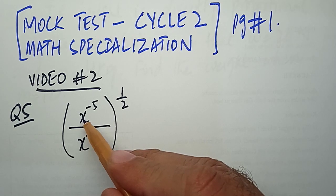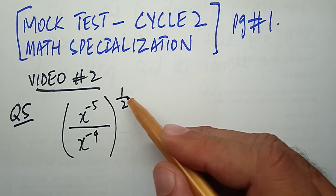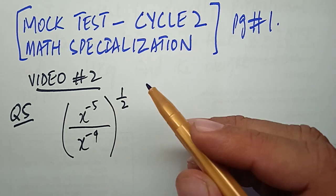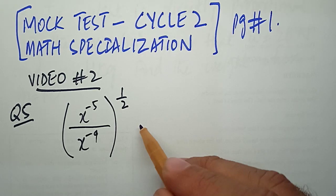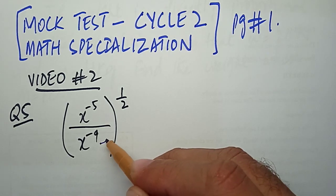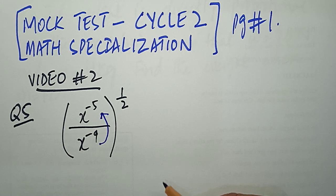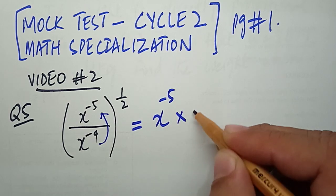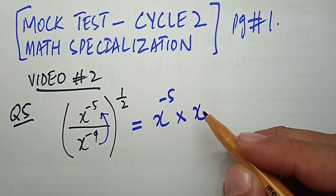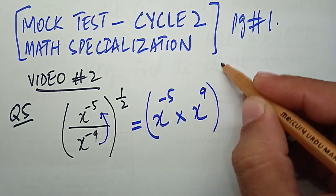In the numerator, the power of X is minus 5; in the denominator, the power of X is minus 9, and then we have a whole power of 1 upon 2. To simplify this, we first need to shift X having a negative index in the denominator to the numerator to make it positive — so X power minus 5, and once shifted, its power becomes positive.